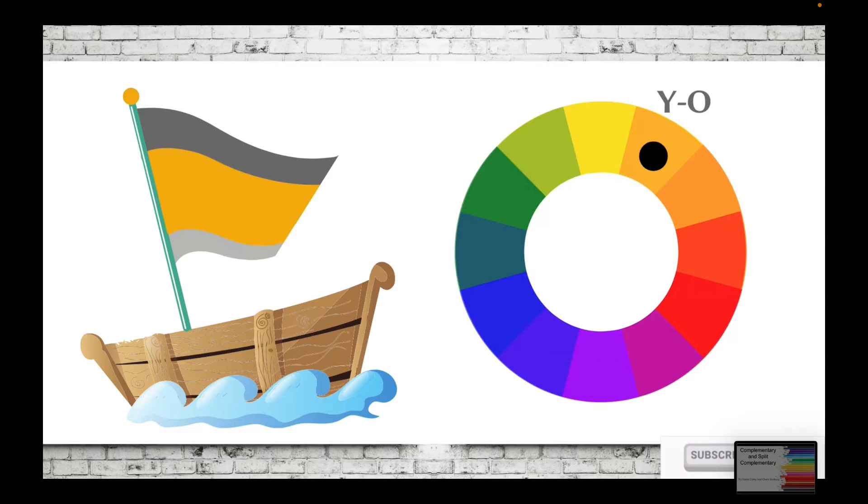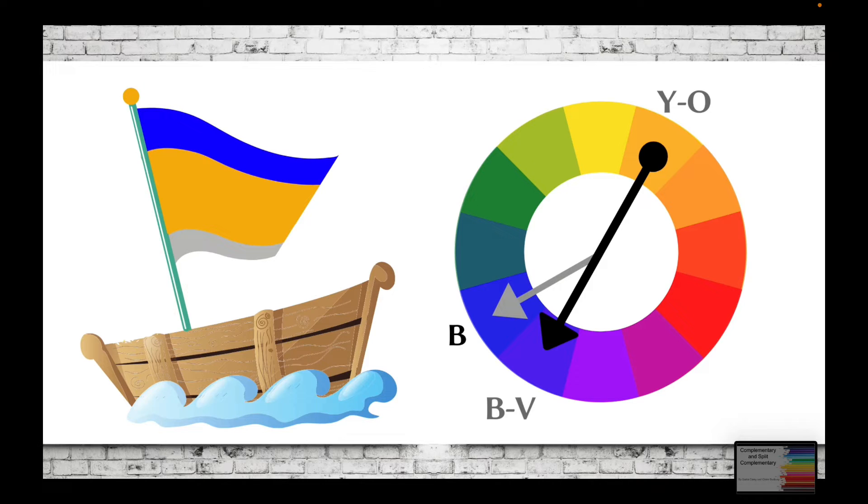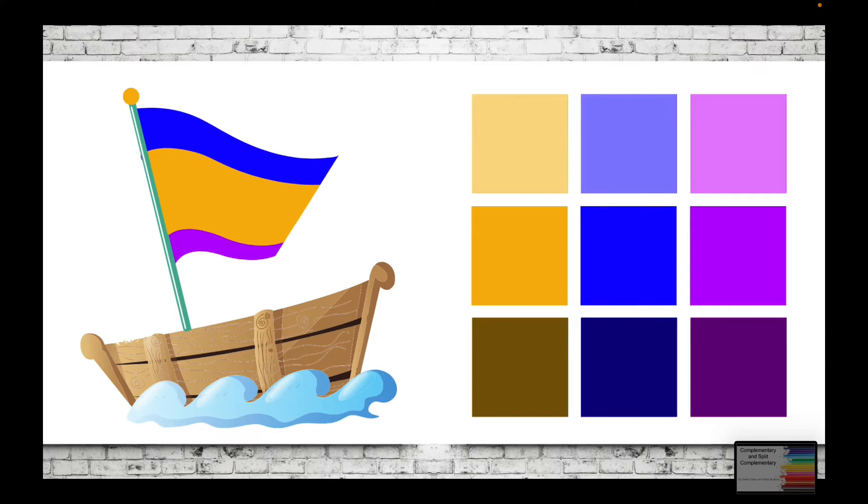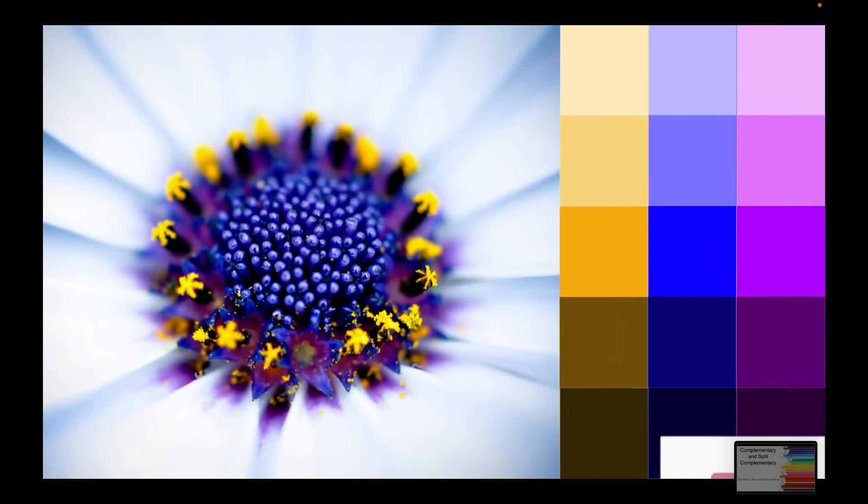Let's try another. Using yellow orange as my dominant color, I must first find its complement. The complement of yellow orange is blue violet. Next, I must identify the colors to the left and to the right of blue violet. They are blue and violet. These colors will make up the split complementary color scheme: yellow orange, blue, and violet.